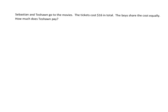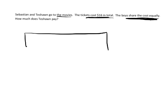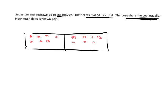In the next problem, Sebastian and Tishan go to the movies and spend $16 total, sharing the cost equally. We set up a tape diagram with two sections — one for each boy — and distribute $16 across them, one dollar at a time: 1, 2, 3... all the way to 16.